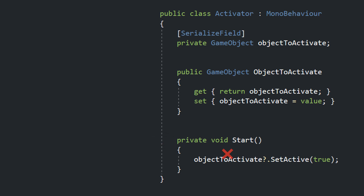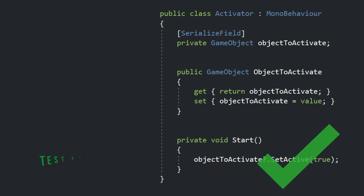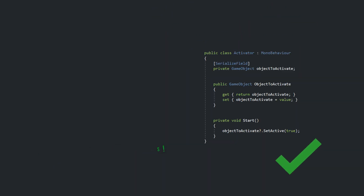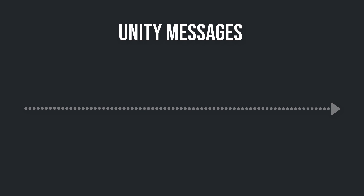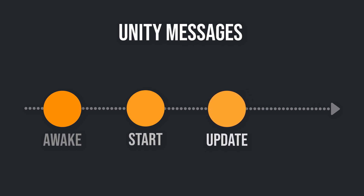Keep in mind that in the normal case you shouldn't test private methods. But in the case of private Unity messages, in my opinion, you should write so-called Unity tests. Unity messages are called in a specific order over time: Awake is called when the script object is initialized, Start is called on the frame when the script is enabled just before any of the update methods are called the first time, and each other frame Unity calls Update.